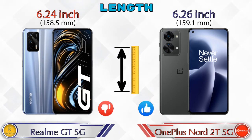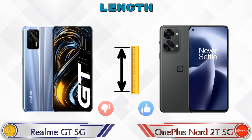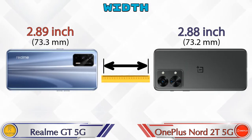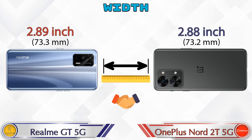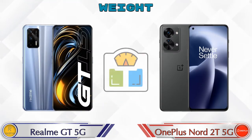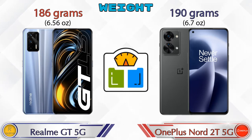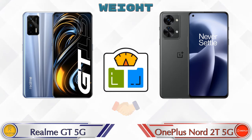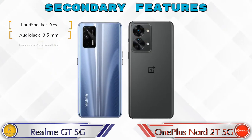The length of the GT 5G is 6.24 inches and the Nord 2T 5G is 6.26 inches. Width is 2.89 inches for the GT 5G and 2.88 inches for the Nord 2T 5G — almost the same. Weight is 186 grams for the GT 5G and 190 grams for the Nord 2T 5G, which are also very similar.